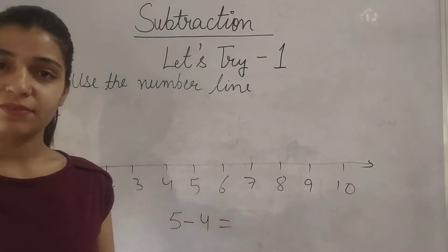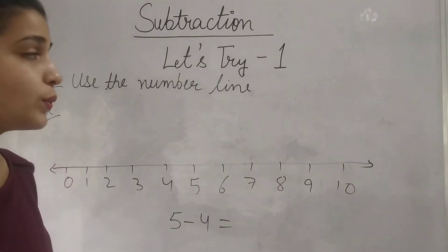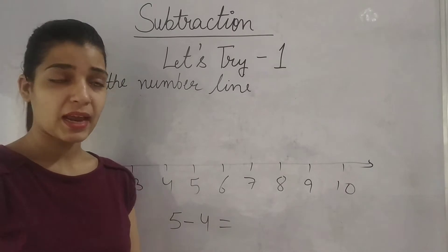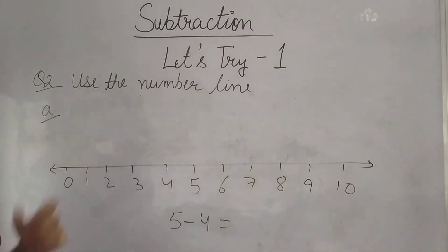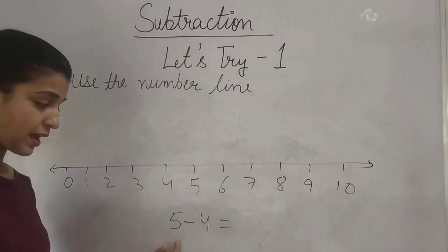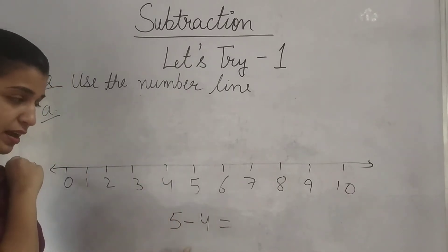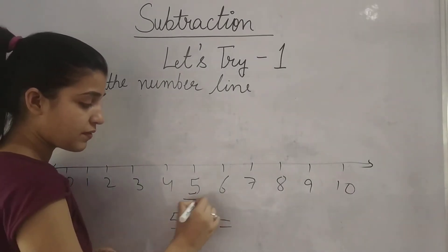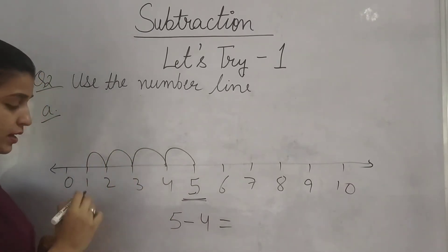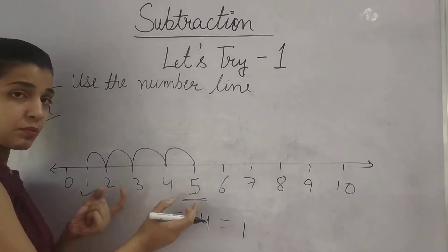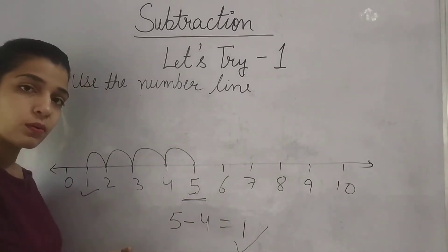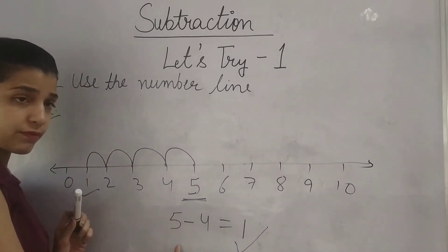We have done question number 1. Now we will do question number 2: use the number line. We will do subtraction on the number line. The question is 5 minus 4 — it means from 5 you have to go back 4 times. So from 5, go 4 steps back: 1, 2, 3, 4. The answer is 1. If you subtract 4 from 5, you get 1.